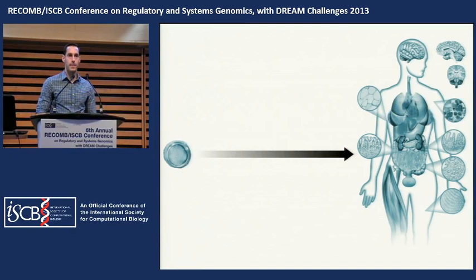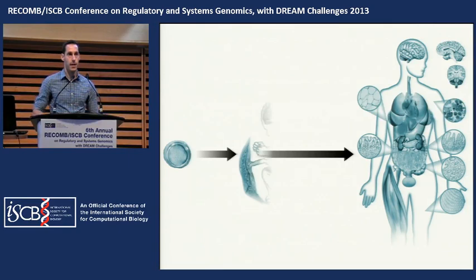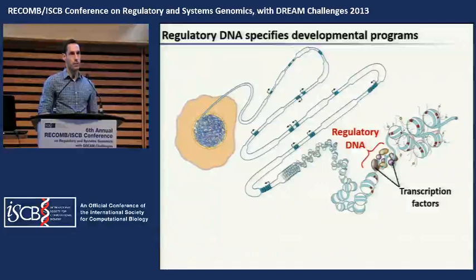One of the fundamental questions of epigenetics is how a single cell gives rise to all of the complex cell types and structures of the adult body. There is of course an intermediate stage of development and growth, and this developmental process is orchestrated by regulatory DNA elements which act through sequence-specific transcription factors to control gene expression programs in precise spatio-temporal manners.